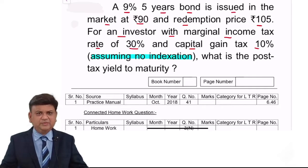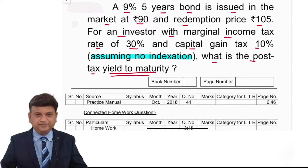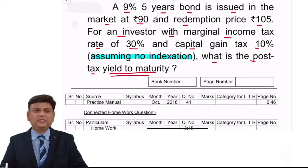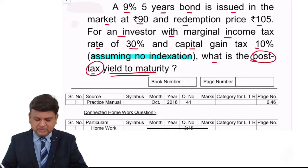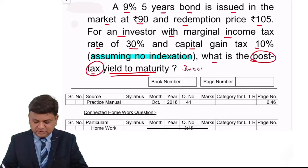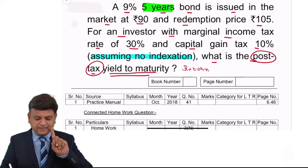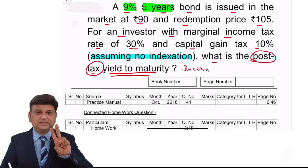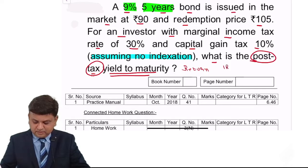What is the post-tax yield to maturity? Yield to maturity means what is the return to the investor, and we need to calculate this on a post-tax basis. We understand that the security is redeemable — that is the first thing. Second, the rate of interest is the same. So we can either use the IRR method or the approximate formula method.